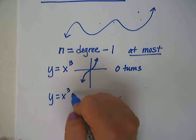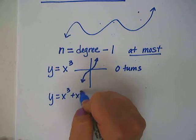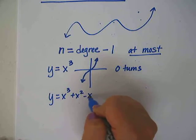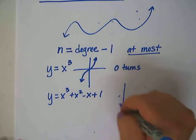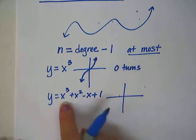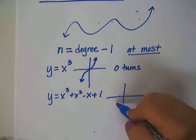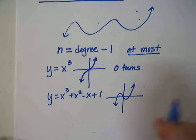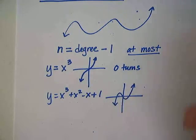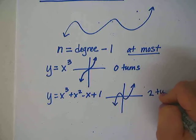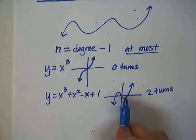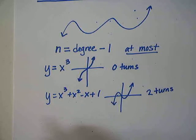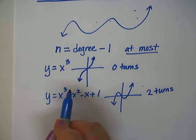However, if we add some stuff to it, by adding other stuff to our function, it often makes it turn up and down a bit. So you can see here that this graph has two turns. It has one local maximum and one local minimum where the graph has changed directions.